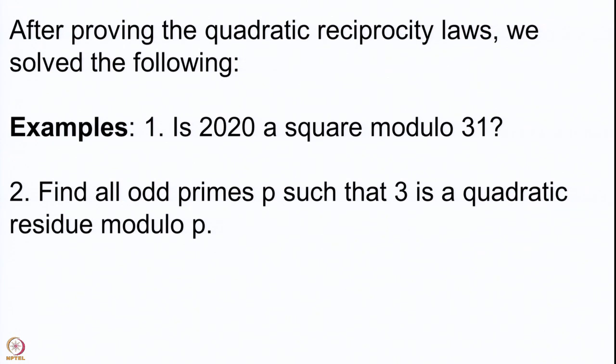Here they are. We computed whether 2020 (the current year) is a square modulo a prime, for example 31. We also saw that we could find all odd primes p such that 3 is a quadratic residue modulo p — that means the Legendre symbol (3/p) is 1. We found all such primes p, given by certain congruence relations. There were arithmetic progressions where all primes gave 3 as a square mod p, and other progressions where 3 is not a square mod p.